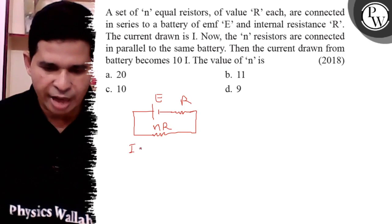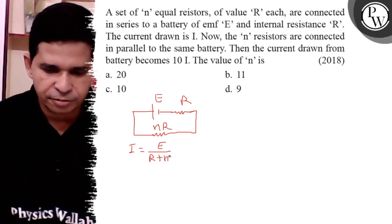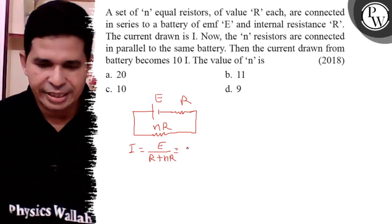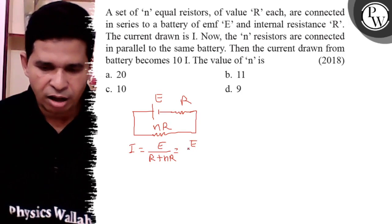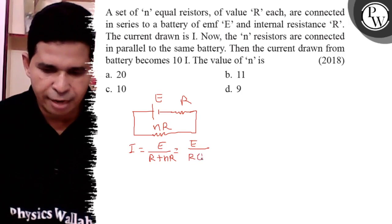So what is the value of I? I is E upon R plus NR, so it is E by R times N plus 1.